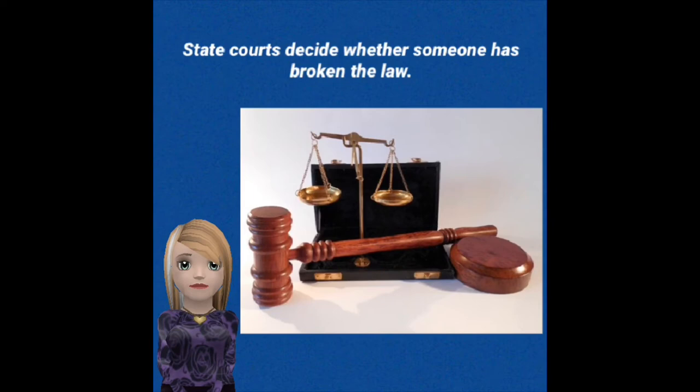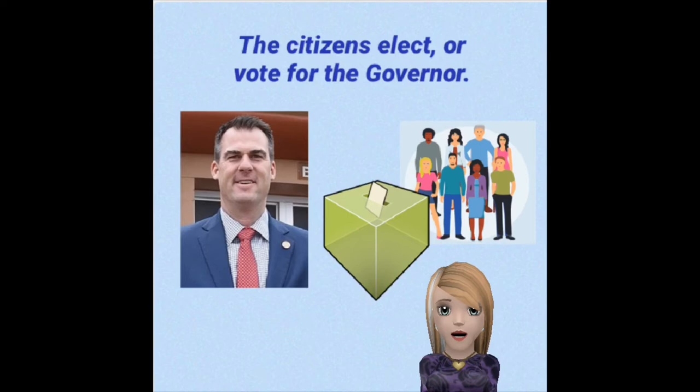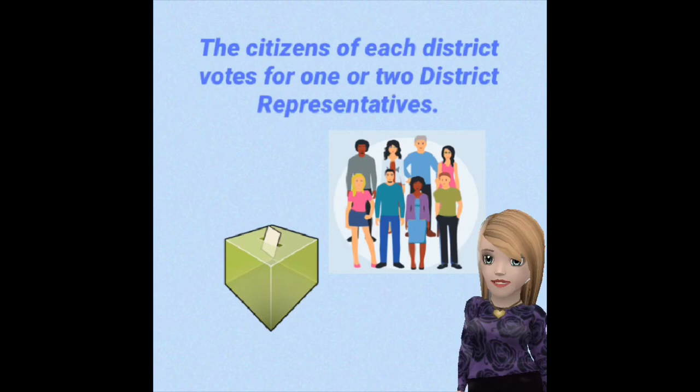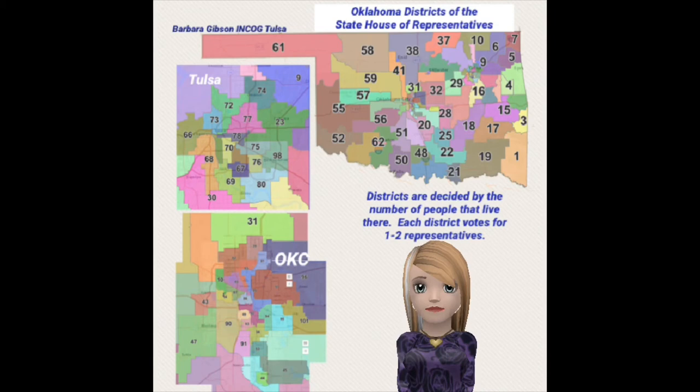State courts decide whether someone has broken the state laws. The citizens elect or vote for the governor. The citizens of each district vote for one or two district representatives. These are the Oklahoma districts of the state house of representatives. Districts are decided by the number of people that live there.